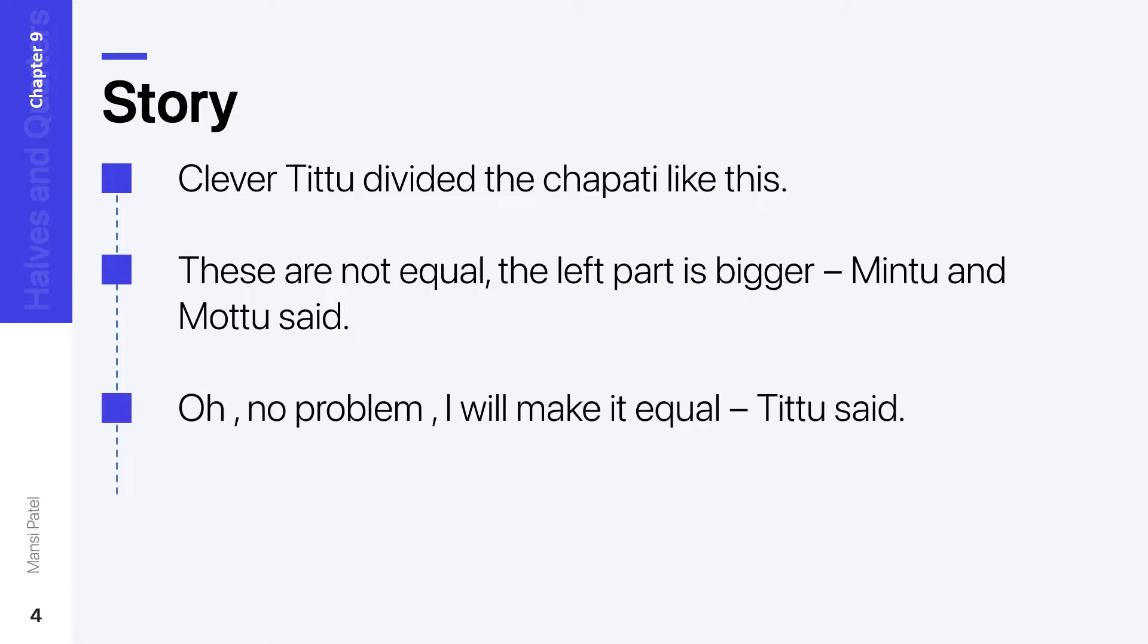So again Tittu monkey says oh no problem, I will make it equal. To make it equal, what is he doing? He then cut a part of the left side which is bigger and ate it. After that, the cats started crying. Why? Because now the right hand side part is bigger.